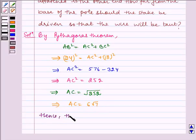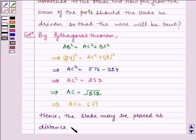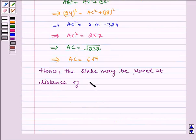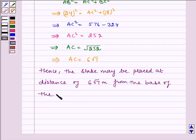Hence the stake may be placed at a distance of 6 root 7 meter from the base of the pole. Hence the required answer is 6 root 7 meter.